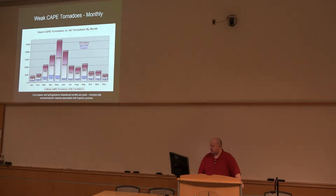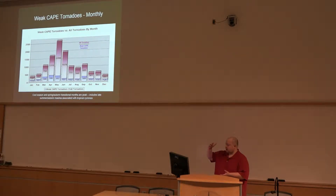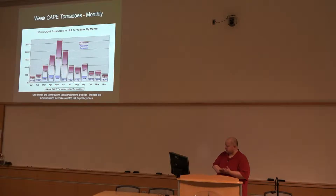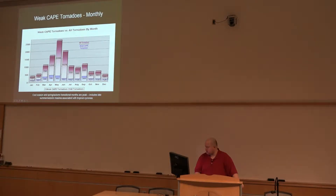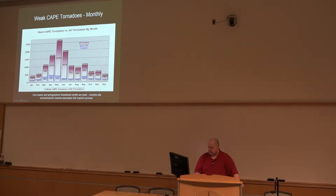The monthly distribution shows all tornadoes as the larger pink-red boxes, with weak CAPE tornadoes as a subset closer to the bottom. Basically, the cool season and transitional times of year have a higher percentage of tornadoes associated with weak CAPE — especially October through February. Then you get into more traditional plains higher-CAPE regimes as you go deeper into the spring and obviously into the summer.